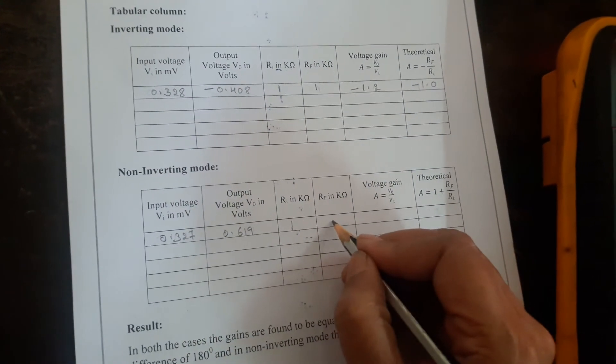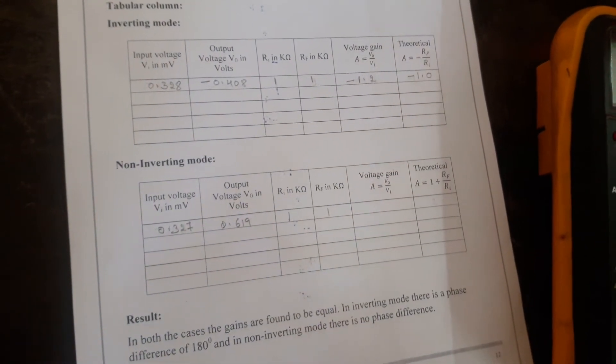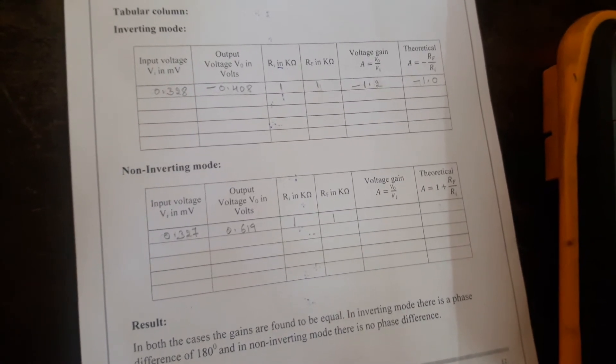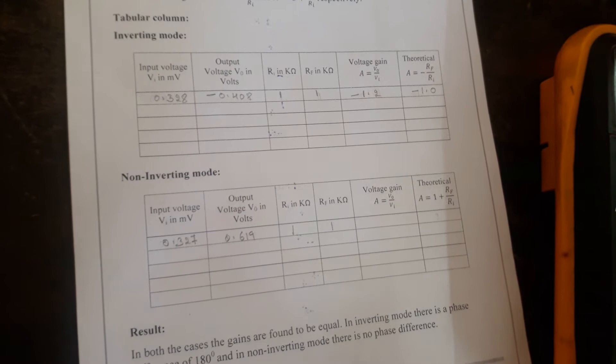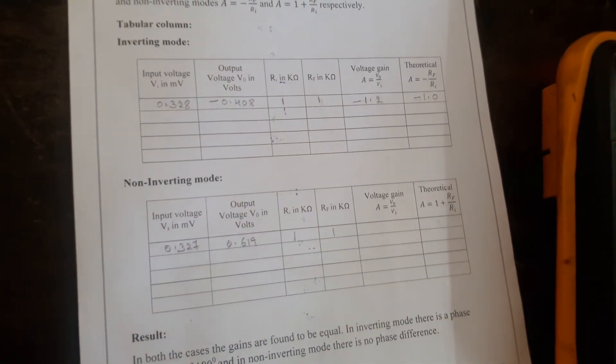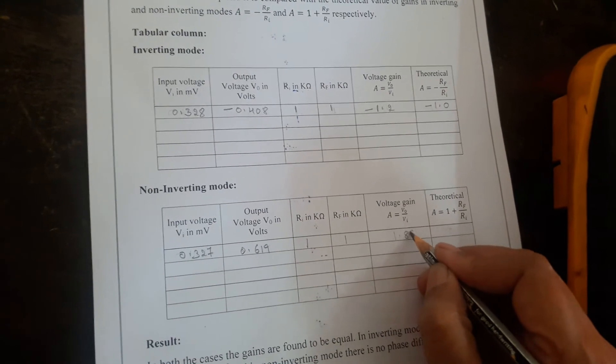Input resistance is 1 kilo ohm. Feedback resistance is 1 kilo ohm. Calculate the gain by dividing output to the input. That is 0.619 divided by 0.327. We are getting it as 1.89.